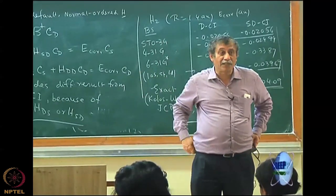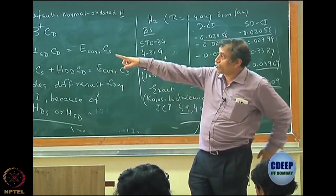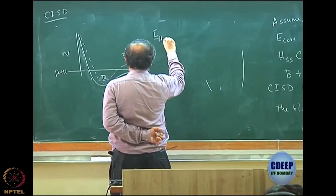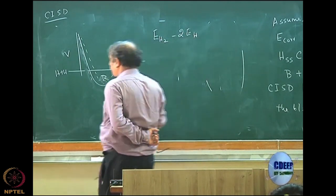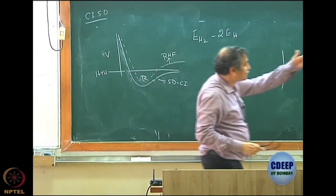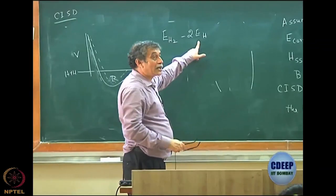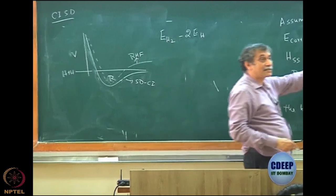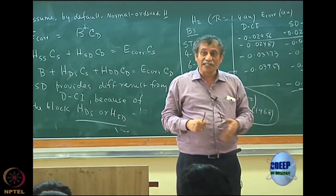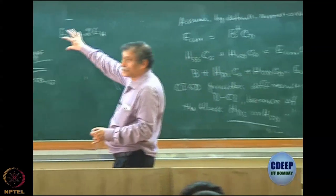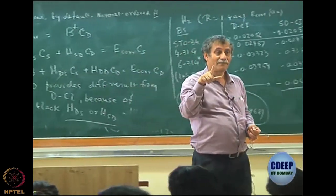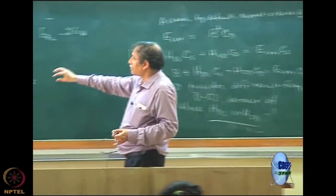When computing dissociation, you must be careful: the quantity is E(H2) minus 2×E(H atom), and the hydrogen atom must be computed in the same basis as the molecule. You cannot use the exact hydrogen atom energy of 13.65 eV because that lacks basis set effects. If you recompute the hydrogen atom in the same basis, the difference correctly goes to zero at large R.